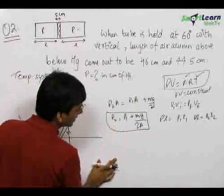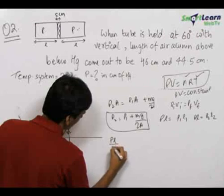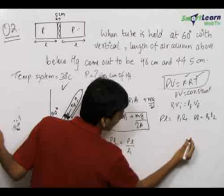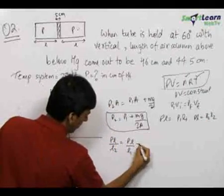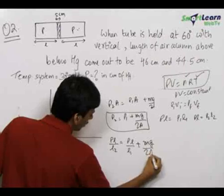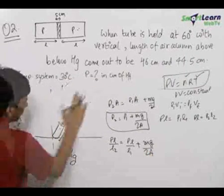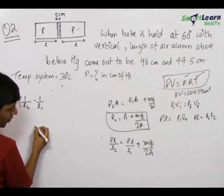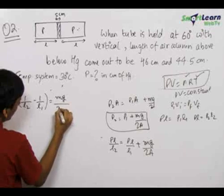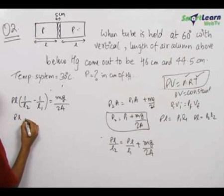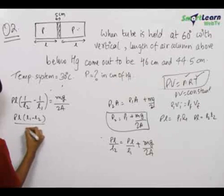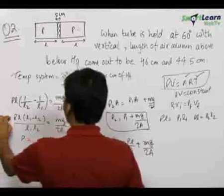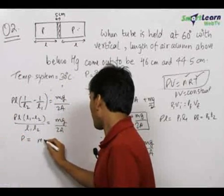Therefore, P2 over here can be written as P into L upon L2 is equal to P1 plus Mg upon 2A. Now we can write P into L into 1 upon L2 minus 1 upon L1 is equal to Mg upon 2A. We can rearrange this as P is equal to Mg times L1 times L2 upon 2A times L times L1 minus L2.